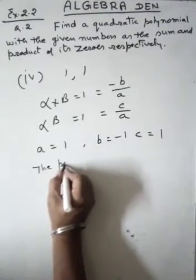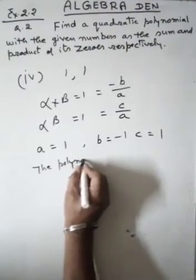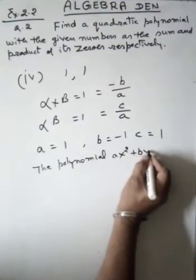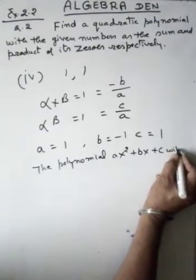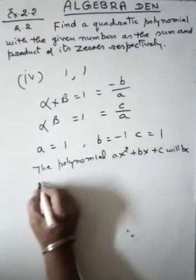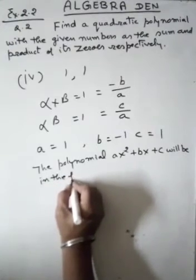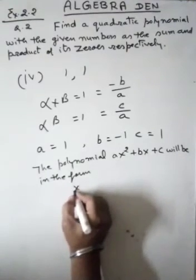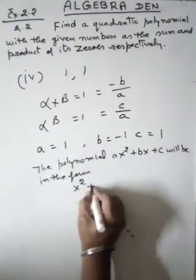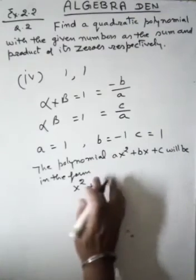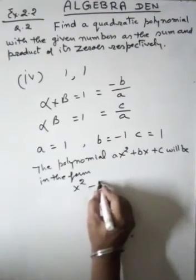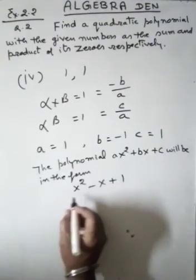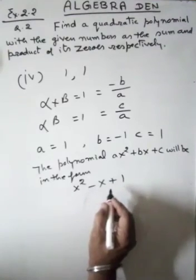Hence, the polynomial ax square plus bx plus c will be in the form: a is 1, coefficient of x square is 1, that is x square, plus b is minus 1, that is minus x, c is 1, that is 1. So the required equation will be x square minus x plus 1.